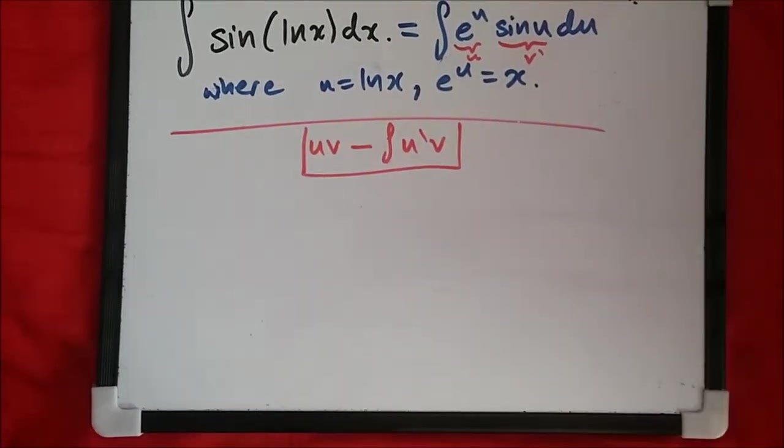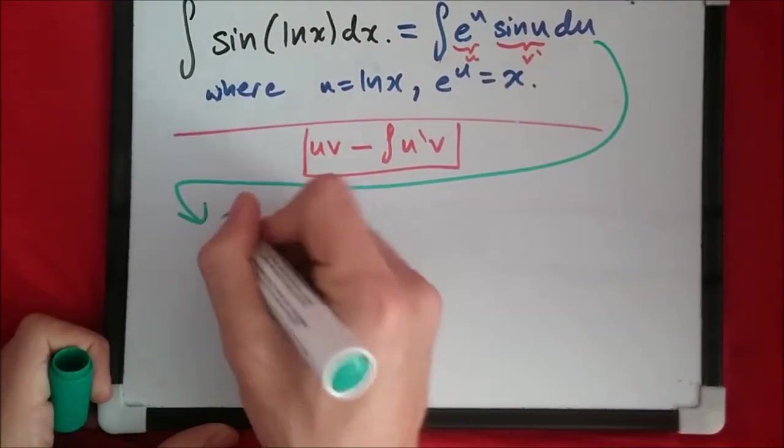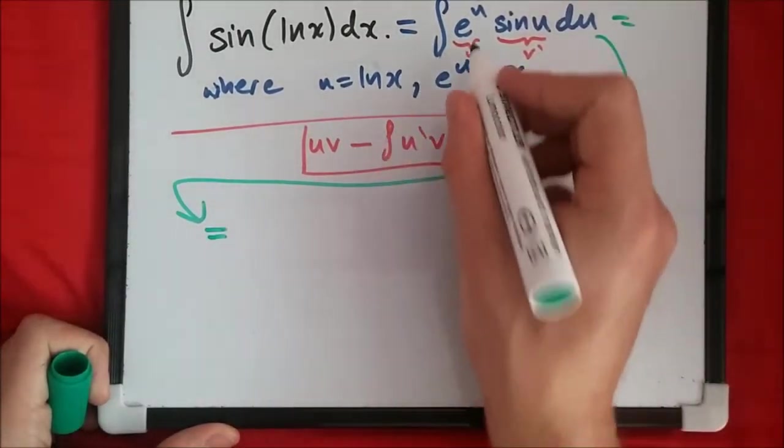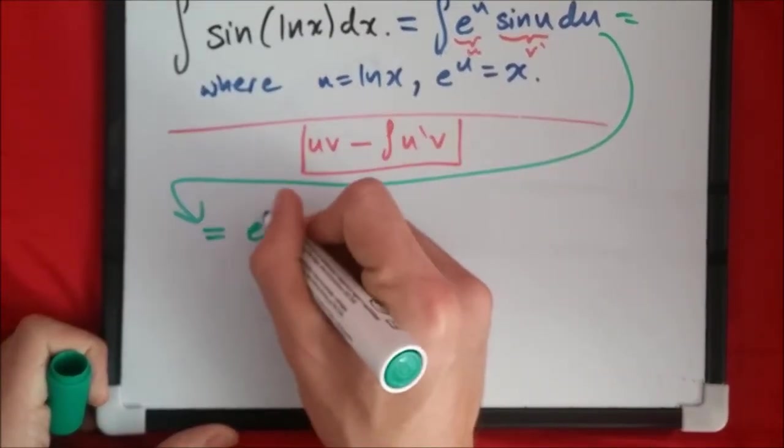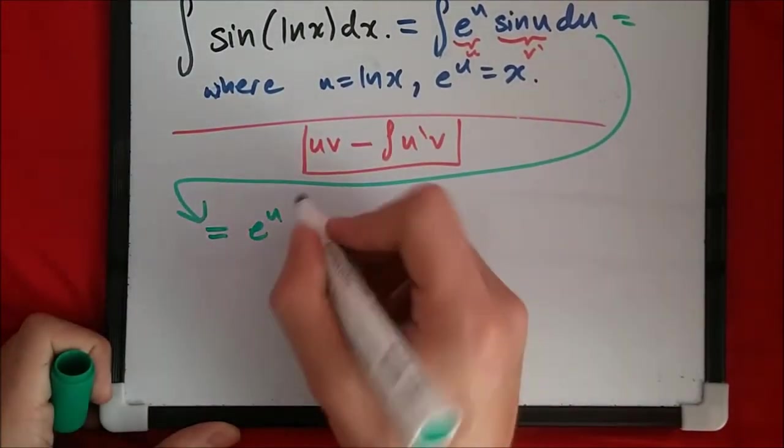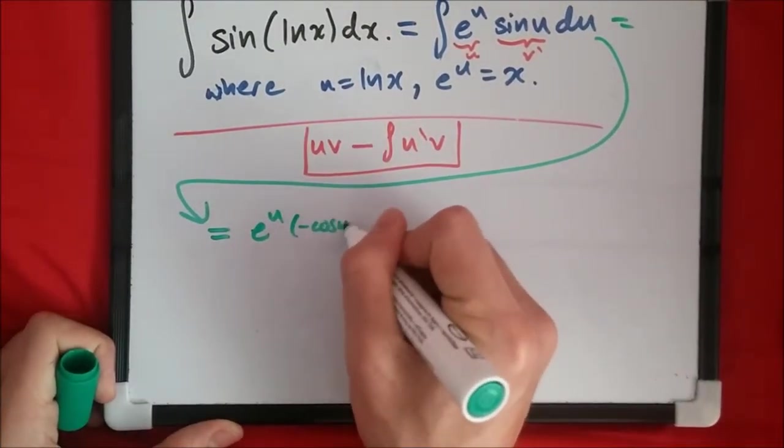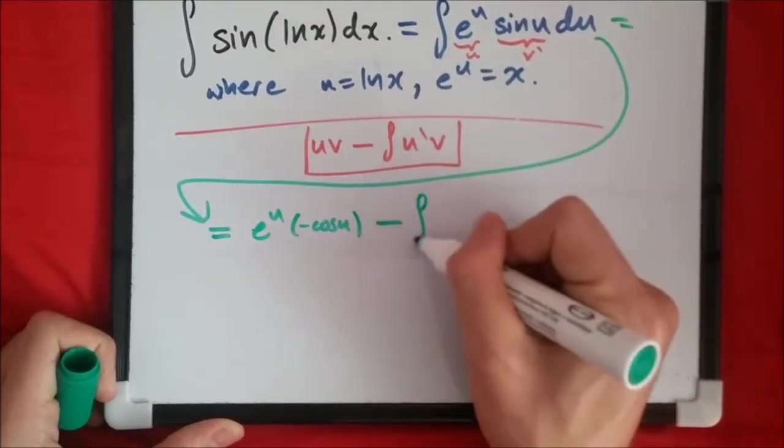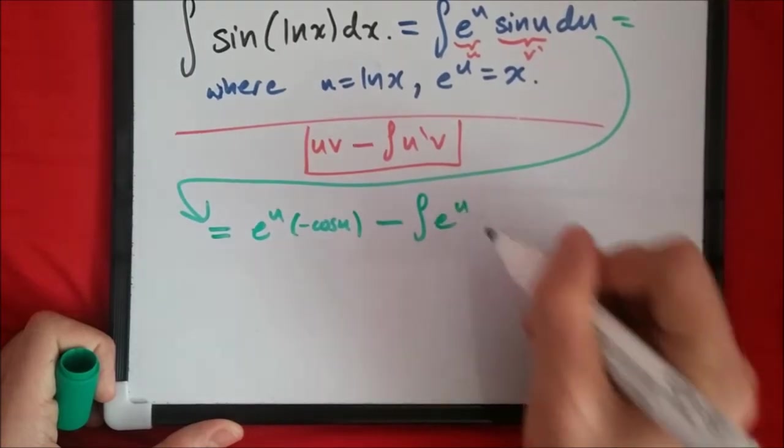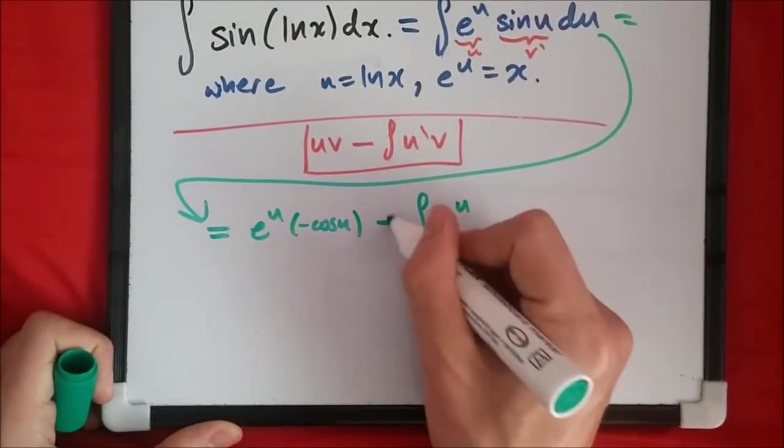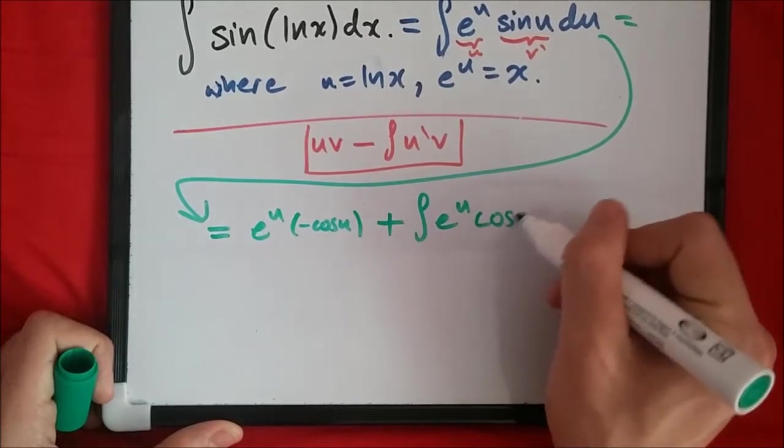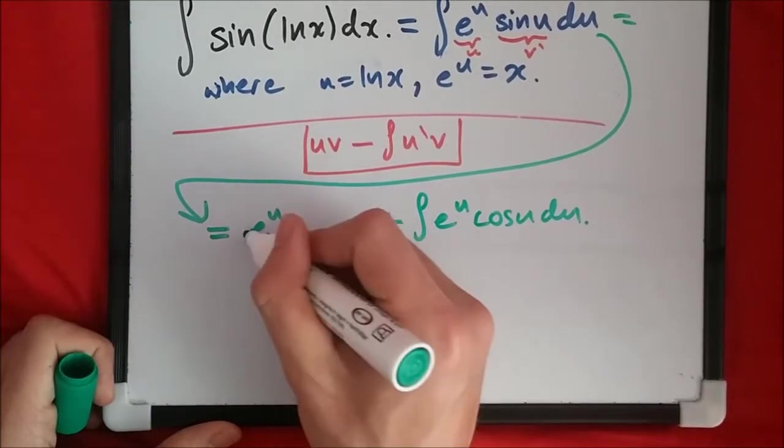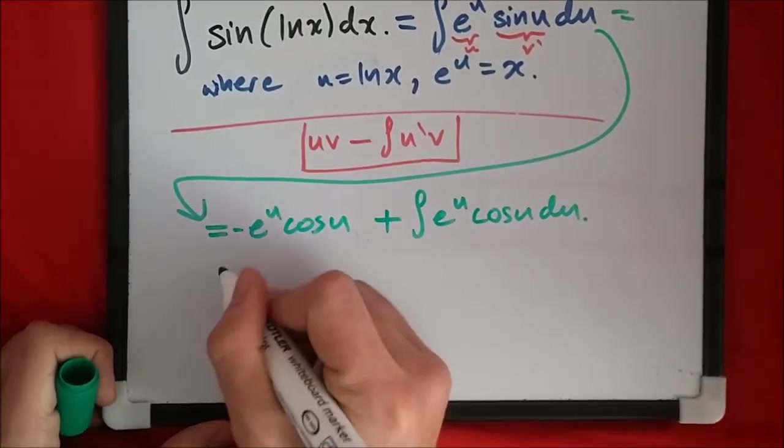Let's jump straight into it and integrate by parts. Starting from here, this term equals u times the integral of sine u, which is negative cosine u, minus the integral of the derivative of e to the u times negative cosine u. So we get negative e to the u cosine u plus the integral of e to the u cosine u du.